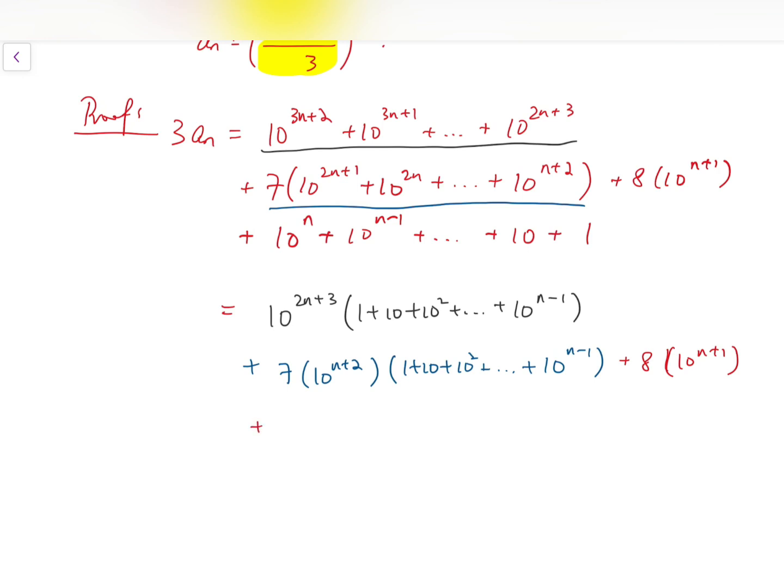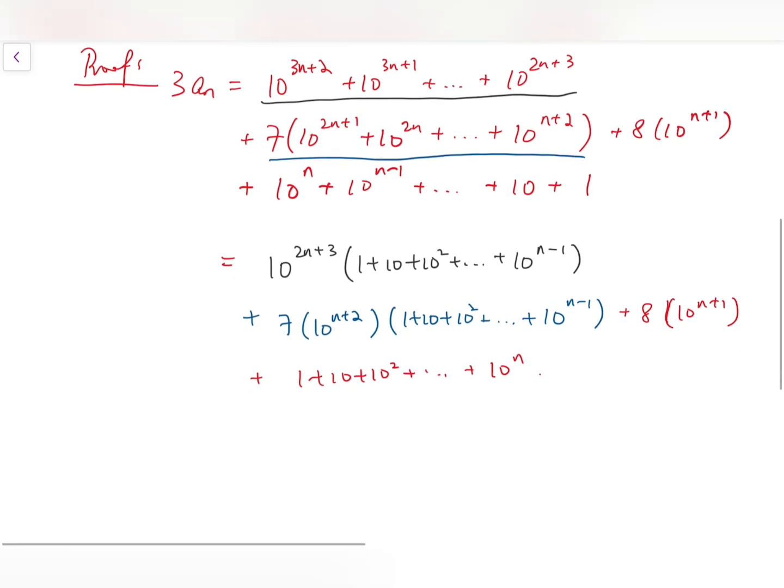And finally for the not underlined block, it's just 1 plus 10, 10 squared, all the way up to 10 to the power n. So now these blocks become much more alike, and it's easier to simplify.